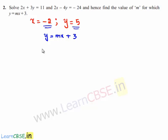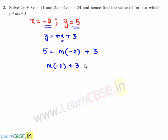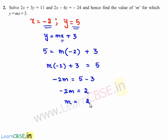Substituting x equal to minus 2 and y equal to 5 in y equals mx plus 3, we get 5 is equal to m times minus 2 plus 3. Rearranging, minus 2m plus 3 is equal to 5, so minus 2m is equal to 5 minus 3, which is 2. Therefore m is equal to 2 divided by minus 2, which is minus 1.